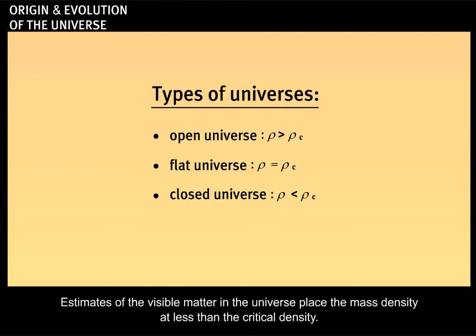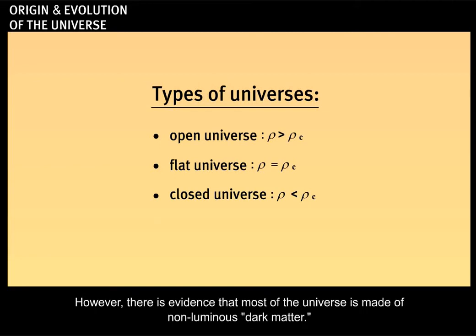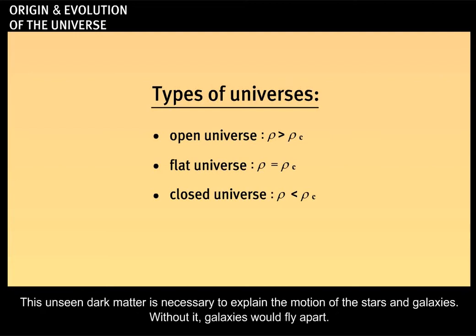Estimates of the visible matter in the universe place the mass density at less than the critical density. However, there is evidence that most of the universe is made up of non-luminous dark matter. This unseen dark matter is necessary to explain the motion of stars and galaxies. Without it, galaxies would fly apart.